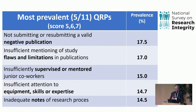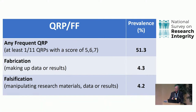Not telling your readers the important flaws and limitations of your study: 70% admit to that. Not being a good supervisor — supervisors supervising postdocs, PhD students, research assistants — self-admitted poor supervision: 50%. Also almost 50% for insufficient attention to expertise, skills, and equipment, and the same for inadequate note-taking. When you take them together, across all eleven questionable research practices, more than half of our respondents admitted to at least one frequently during the last three years. And it gets worse.